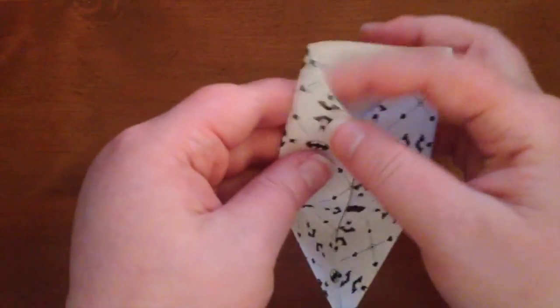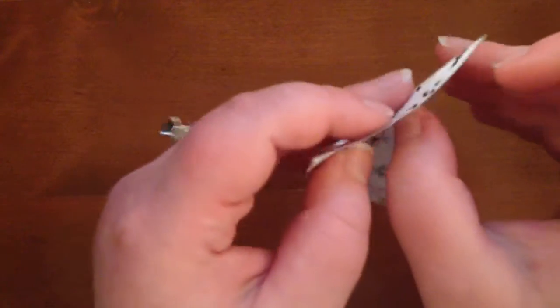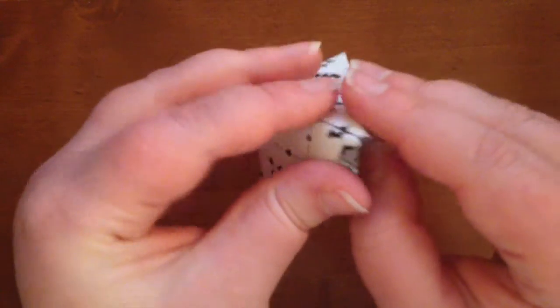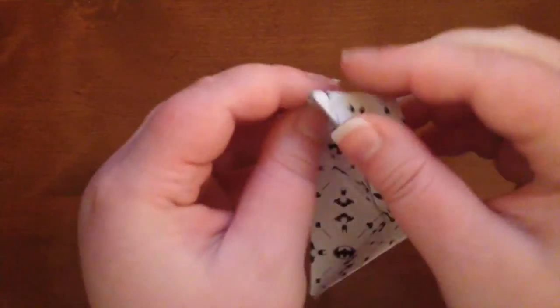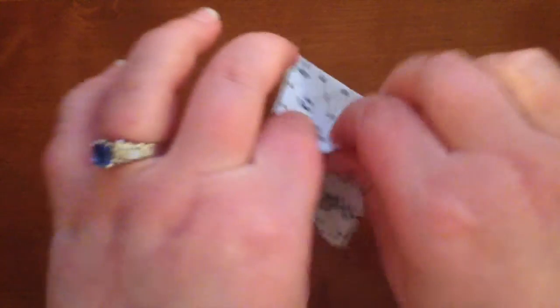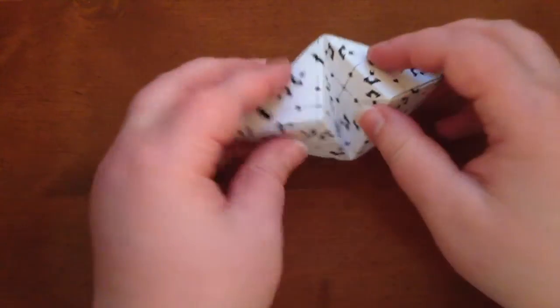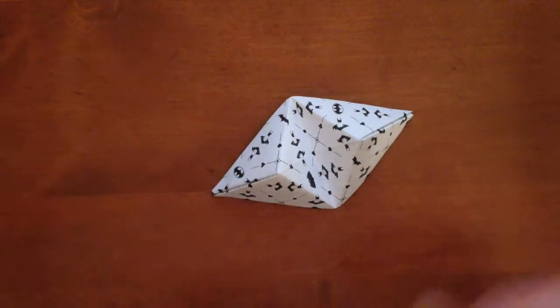Now we're going to do the same thing on the other side. Again, it naturally wants to do that, so you're going to get your flap ready and fold it in. Fold that under, give it a nice little squeeze, and crease that middle again. And ta-da, you have a handy dandy Batman phone stand.